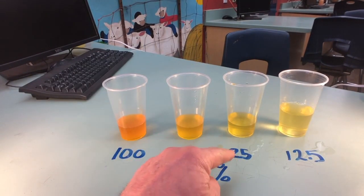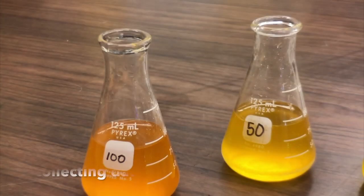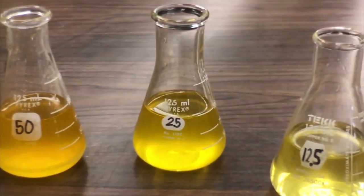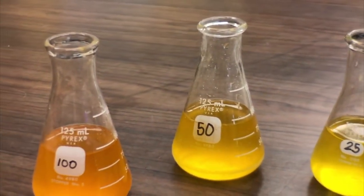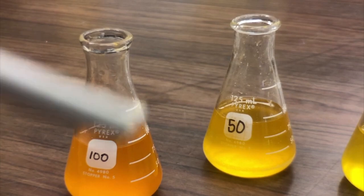We should have 50, excuse me, 100, 50, 25, and 12.5%. Now we're going to look at our serial dilutions. You can see that they're 100%, 50%, 25%, and 12.5%. All of those, starting from 100 down, is basically 50% of its salt concentration that we have in the sports drink.